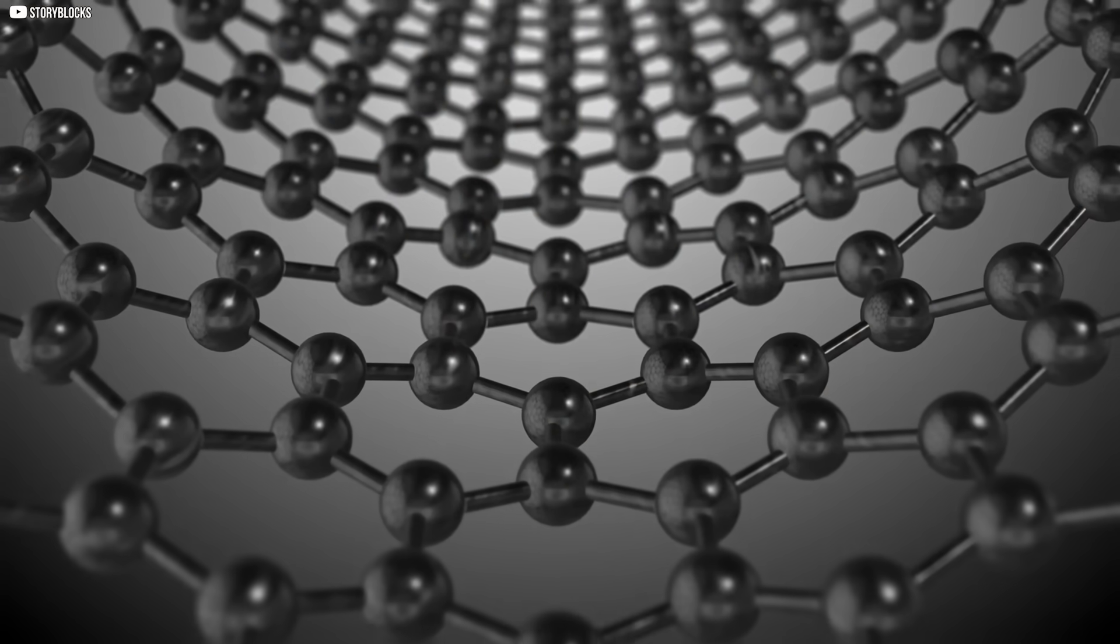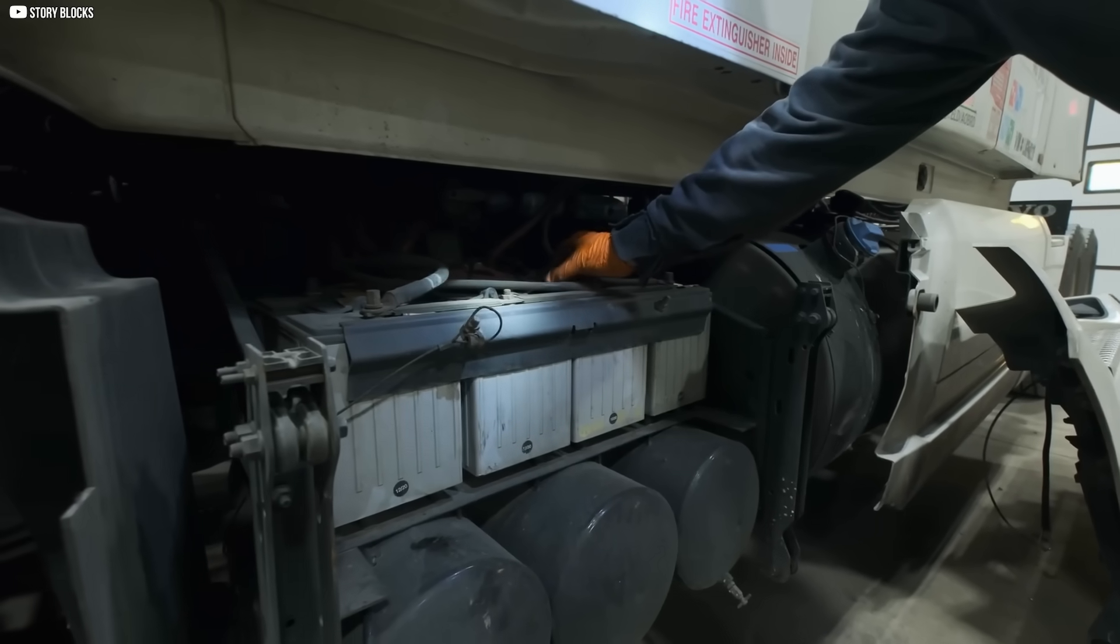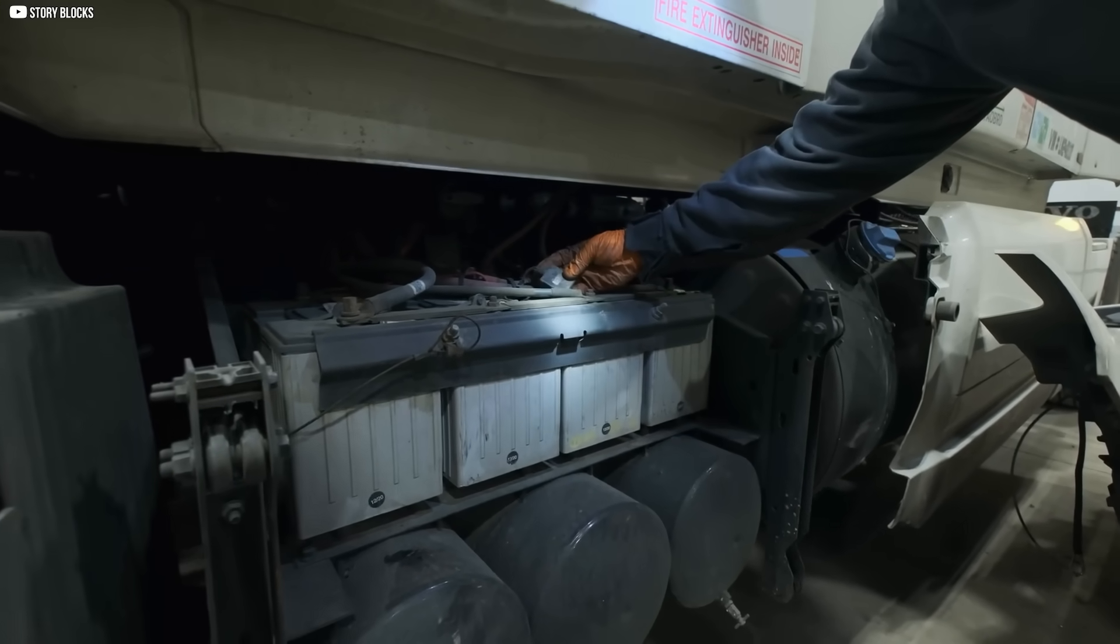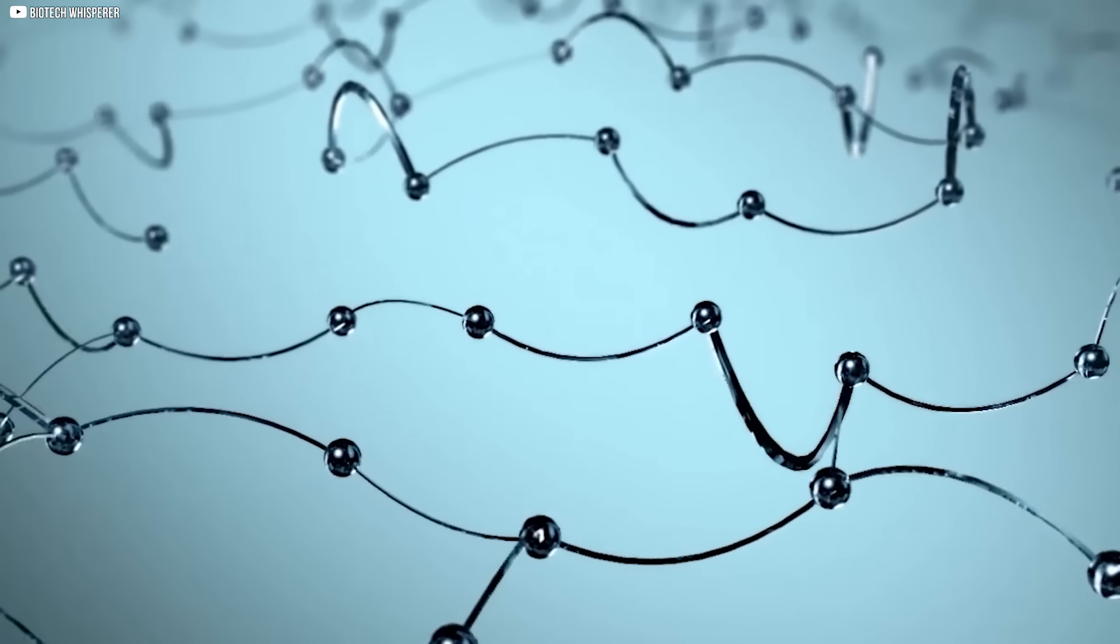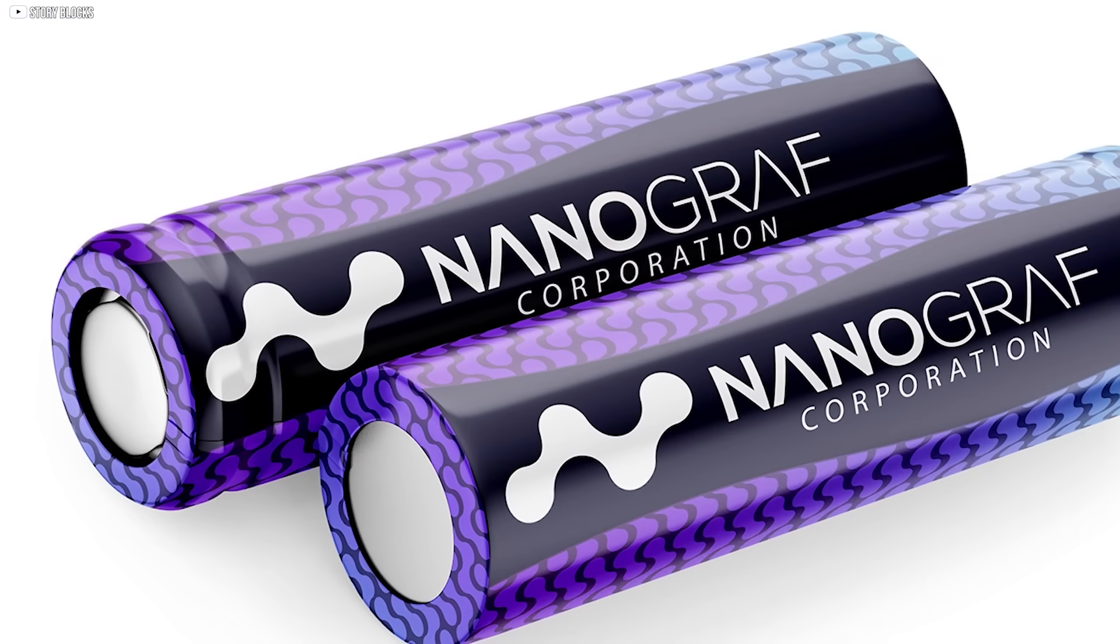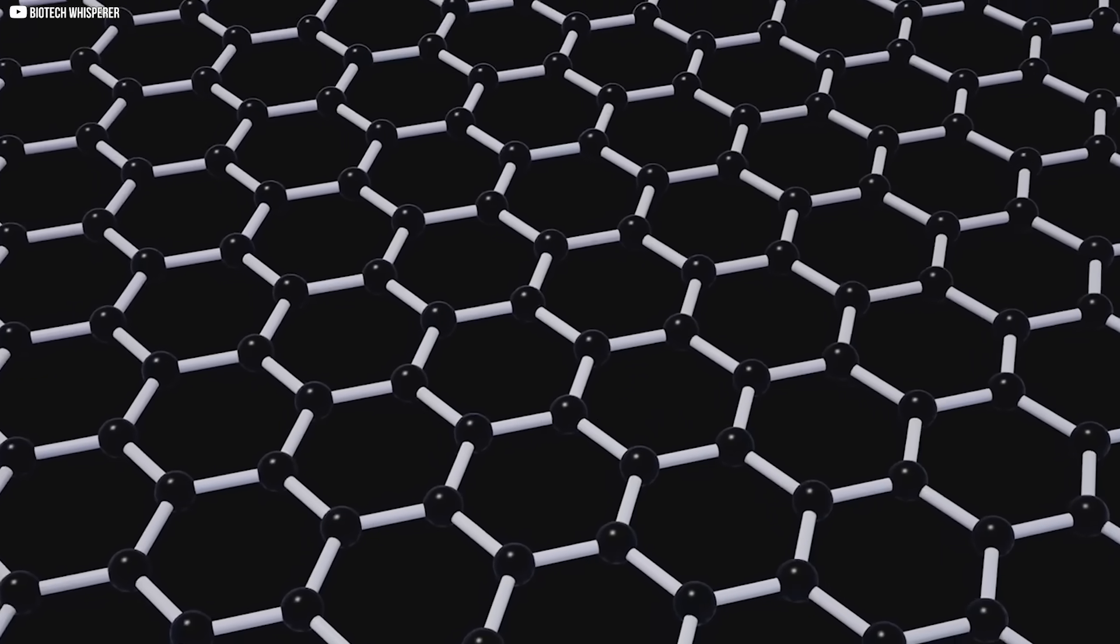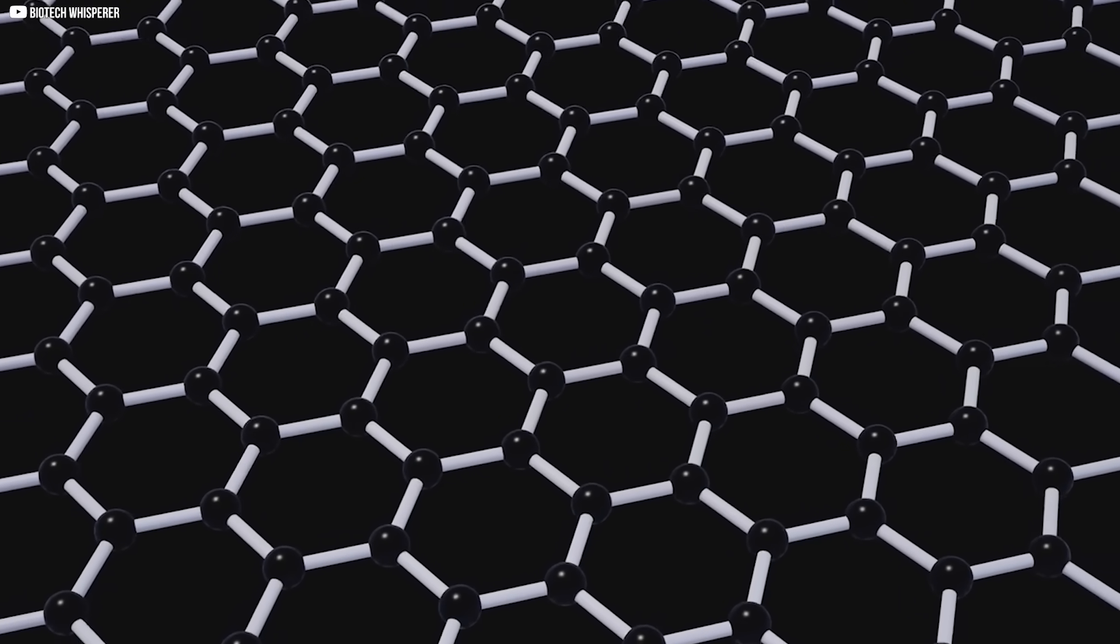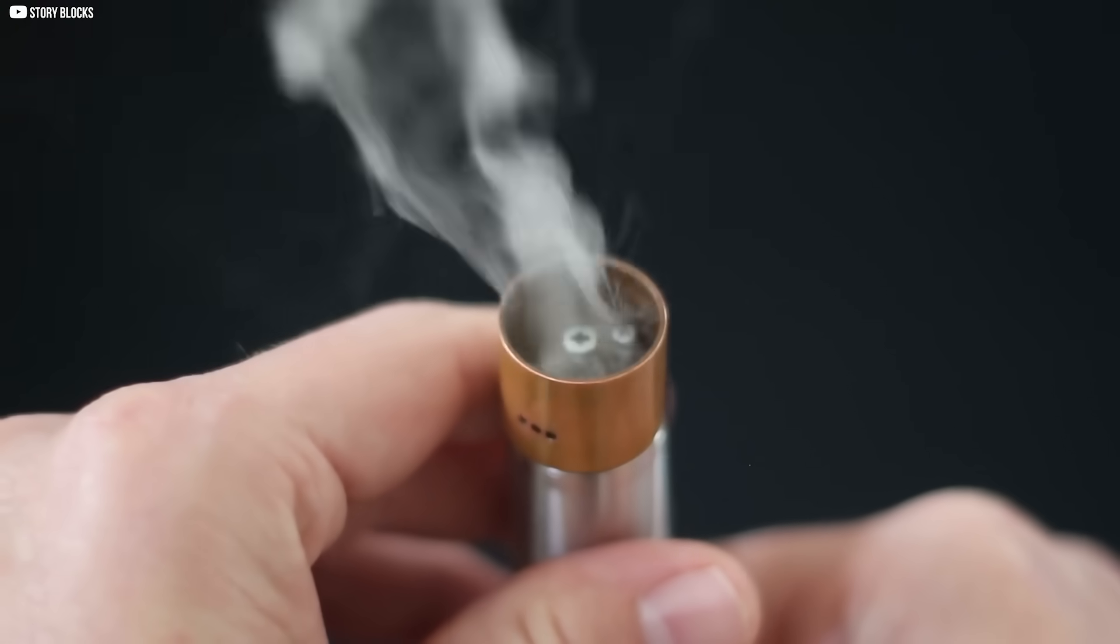It's rare to find a material that's both this light and this strong. Even rarer to see it perform so reliably under pressure. Without graphene, Nanograph's battery wouldn't work the same way. It's not an accessory. It's the secret weapon. A microscopic structure with a massive purpose, holding everything together while letting energy move freely.